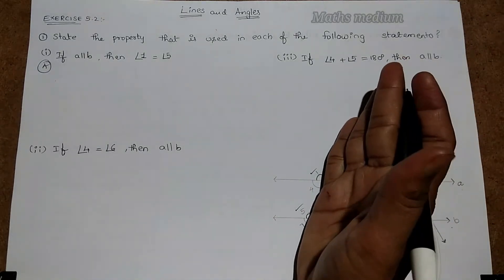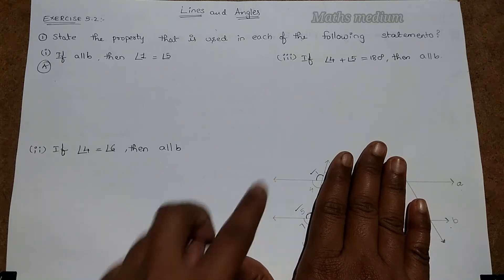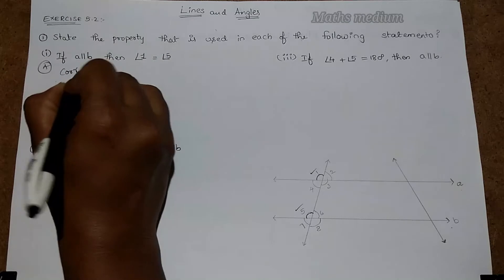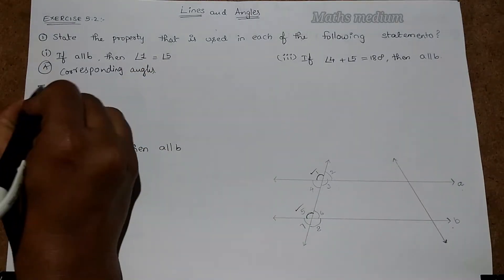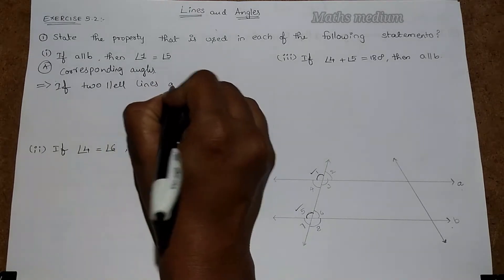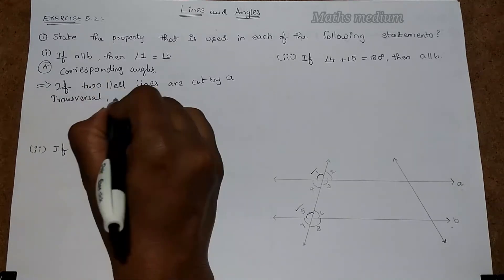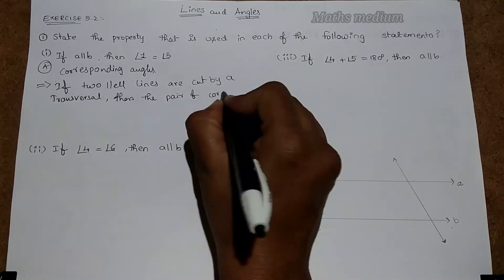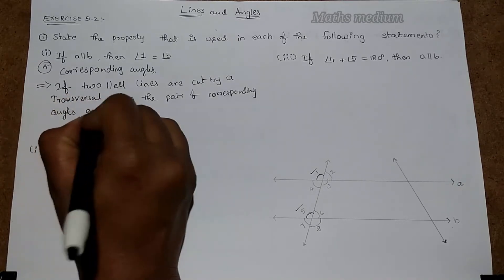Corresponding angles — if you close this side of the transversal, this is the upper part of line A and this is the upper part of line B. These are corresponding angles of the transversal. Corresponding angles: if two parallel lines are cut by a transversal, then the pair of corresponding angles are equal.